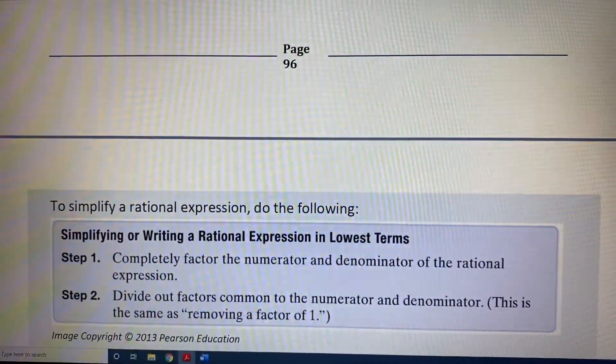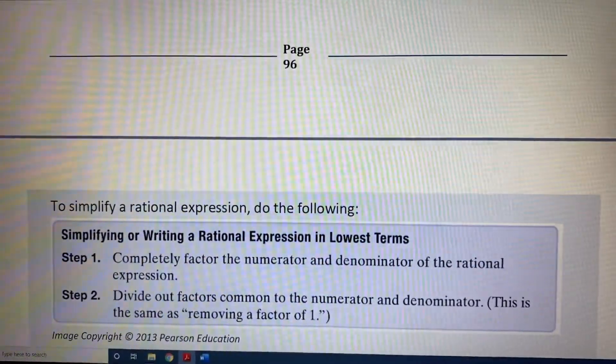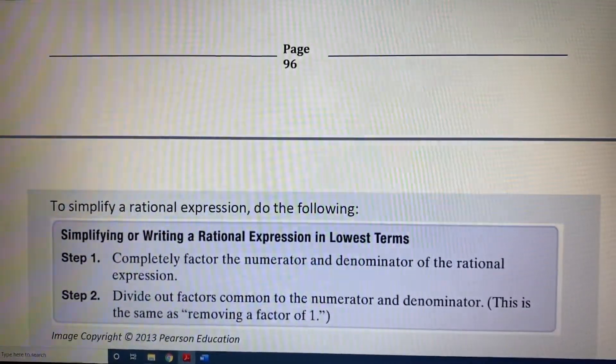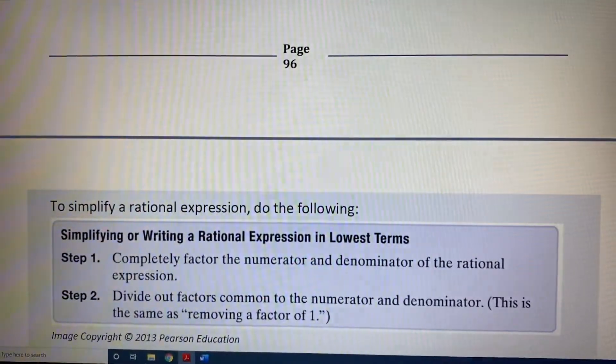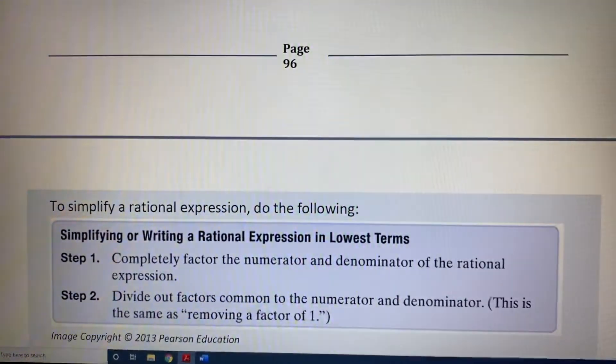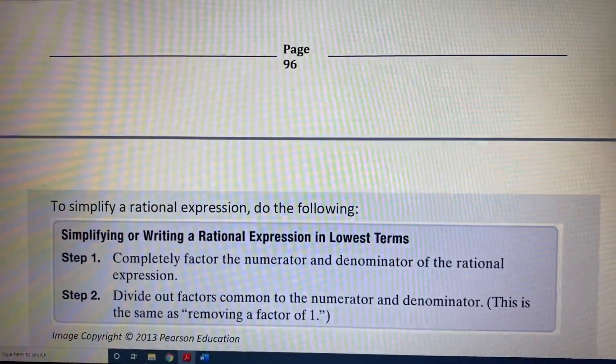Now, to simplify a rational expression, follow this simple two-step procedure. Step one: completely factor the numerator and denominator of the rational expression. Step two: divide out factors common to the numerator and denominator. This is the same as removing a factor of one.